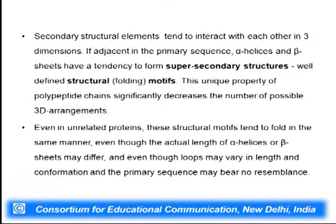Secondary structures tend to interact with each other in three dimensions. If adjacent in the primary sequence, they tend to form super-secondary structures — the motifs. The unique property of polypeptide chains significantly decreases the number of possible three-dimensional arrangements. Even in unrelated proteins, structural motifs tend to fold in the same manner, and you may not have the exact sequence but it may result in the exact motif, sometimes with different function.